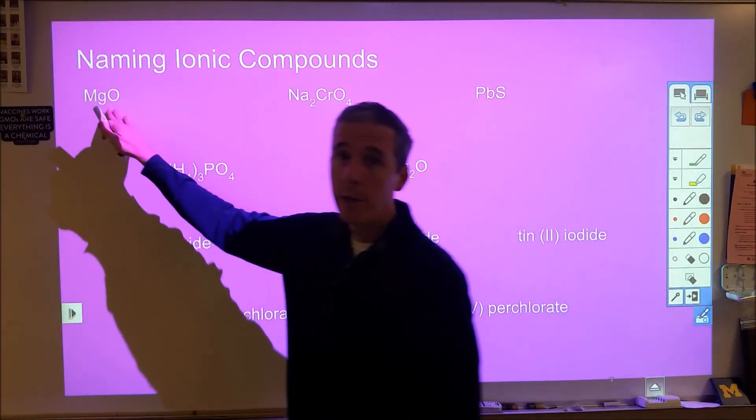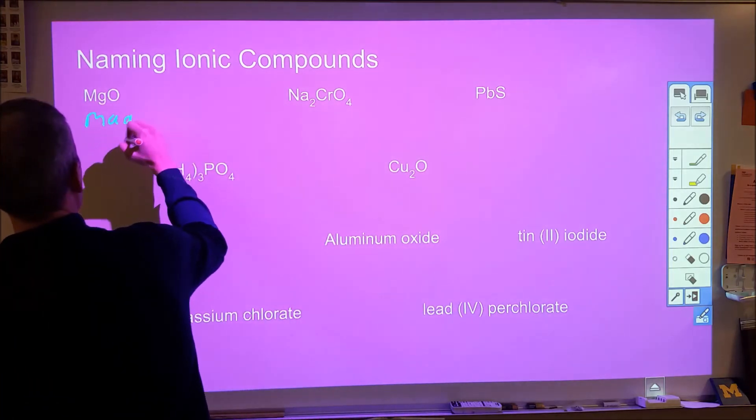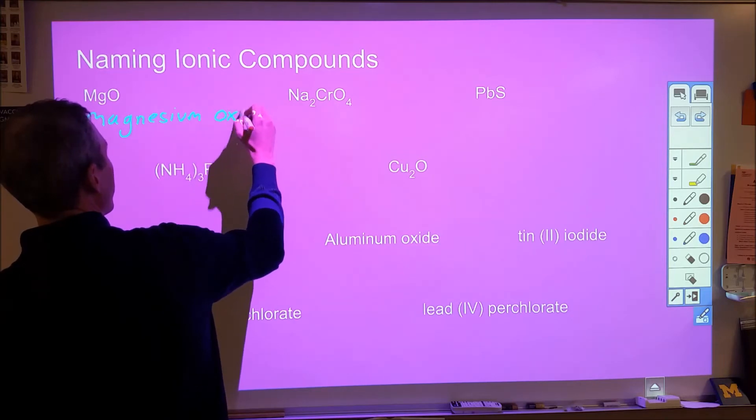All right so the first one here we just have a binary compound magnesium and oxygen so all we do is name them. So we have magnesium and then oxygen becomes oxide.